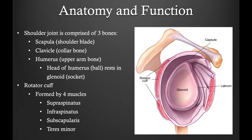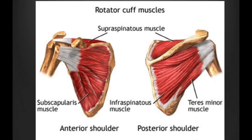The shoulder is a ball and socket joint. It's composed of three bones: the scapula, clavicle, and the humerus. It is surrounded by the rotator cuff muscles. There are four rotator cuff tendons. The tendon we will be discussing is the subscapularis tendon which runs in the anterior aspect of the shoulder. The subscapularis muscle covers the front of the shoulder and provides strength and stability to the anterior aspect of the shoulder.